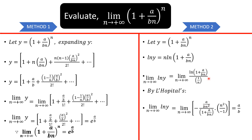Differentiating with respect to n: the derivative of (a over bn) — since a over b is a constant, we're differentiating 1 over n, which gives negative 1 over n squared — so multiplied by a over b we get negative a over bn squared. Remember there's a negative sign here. This is divided by the function itself, which is (1 plus a over bn). Then the derivative of the denominator — which is 1 over n — is negative 1 over n squared.